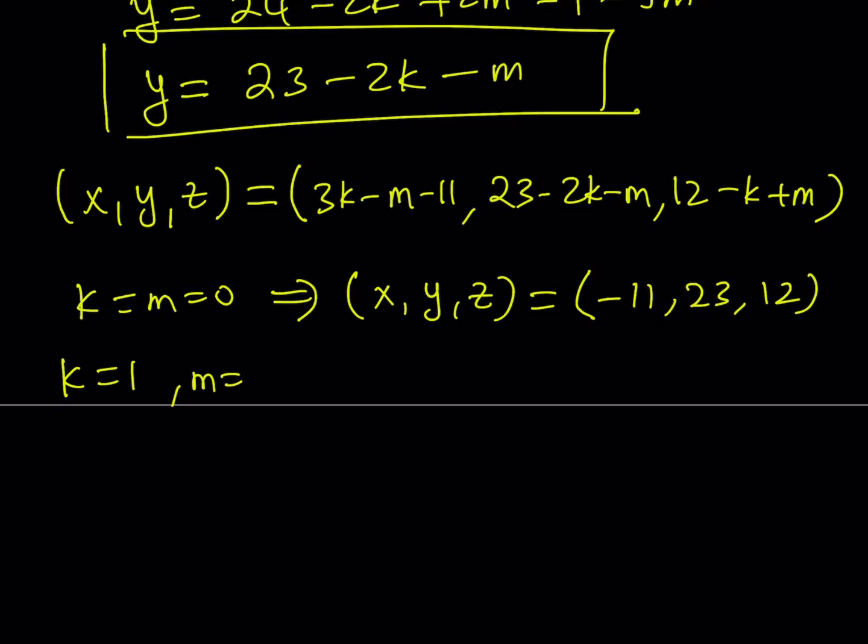Let's take a look at another case. k equals 1, m equals 0. It's going to give you another ordered triple x, y, z. That's going to look like negative 8, 21, and 11.